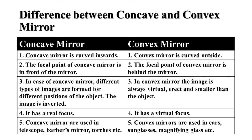Third, in case of concave mirror, different types of images are formed for different positions of the object and the image is inverted. While in convex mirror, the image is always virtual, erect, and smaller than the object.